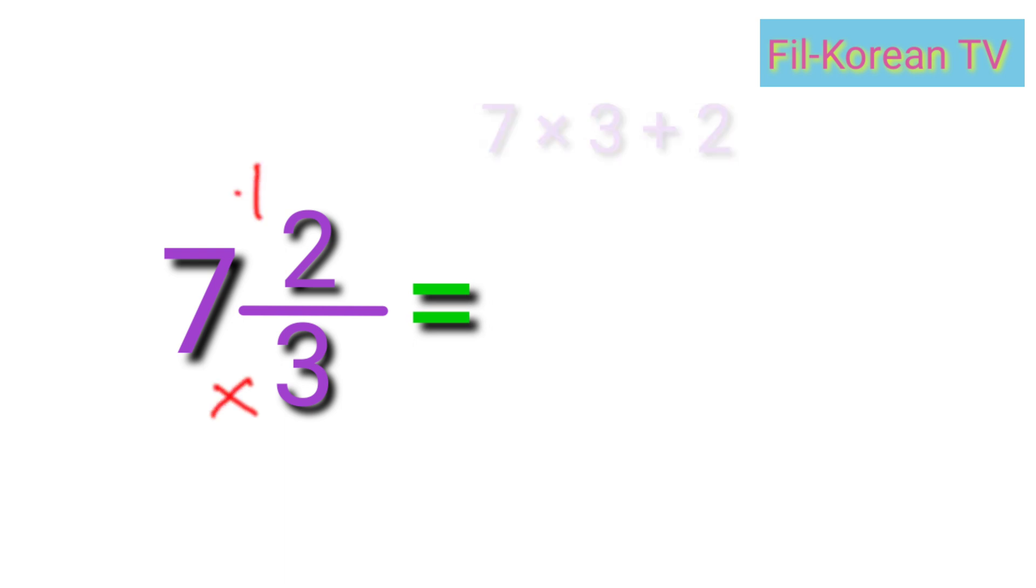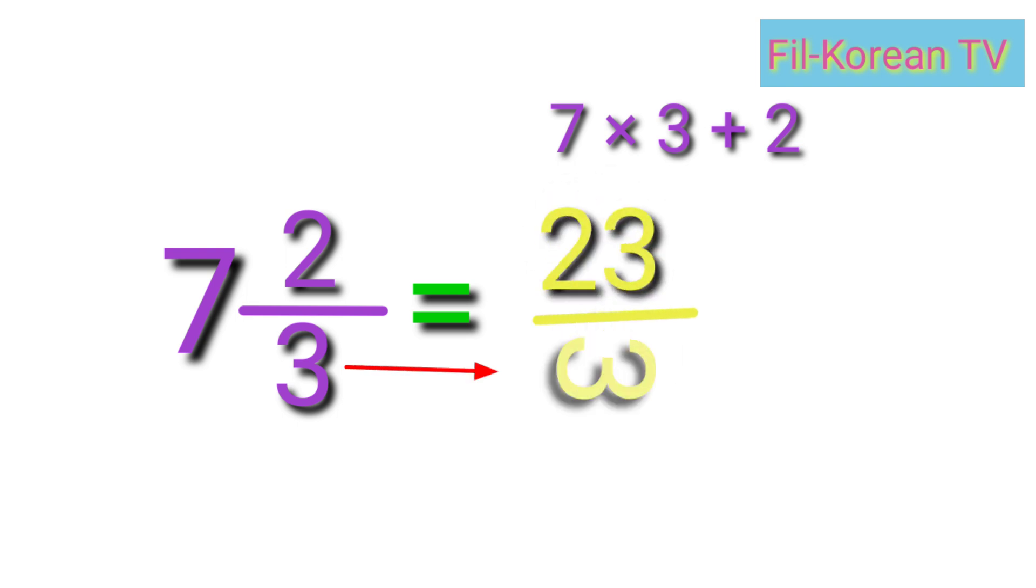Seven times three equals twenty-one, plus two equals twenty-three. Then, copy the denominator, three. The answer is twenty-three over three.